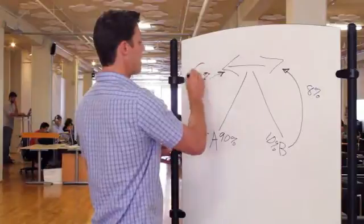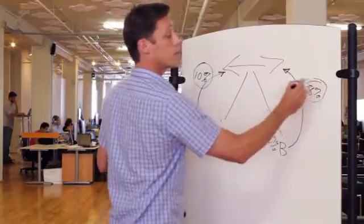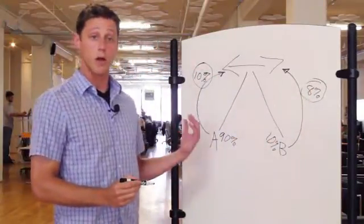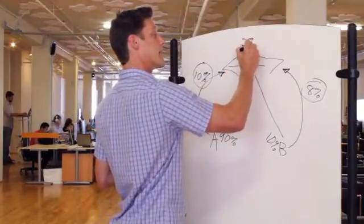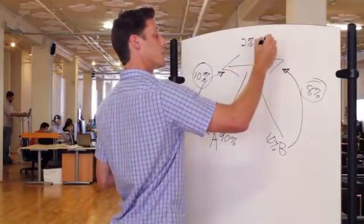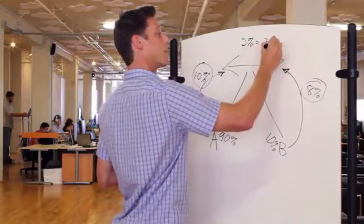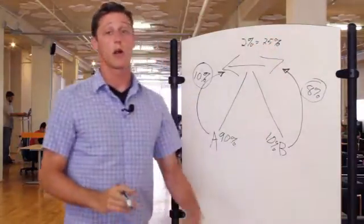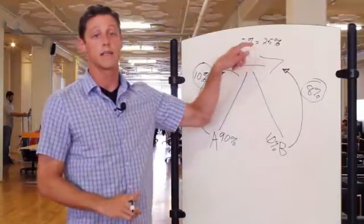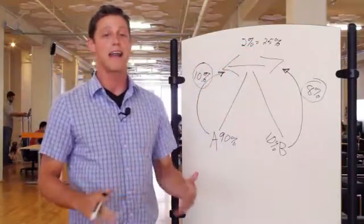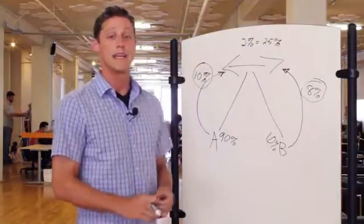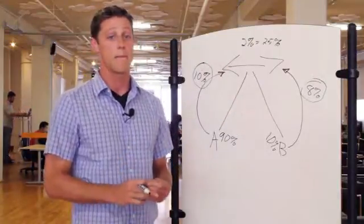Then we can compare the two conversion rates between the group that was retargeted and the group that wasn't and see the actual lift. In this case, we got 2% more, which is equal to a 25% lift in your conversion rate. That is the true impact of the retargeting campaign. No matter what the CPC is, CPA, or anything else, this is the true net impact of a retargeting campaign.